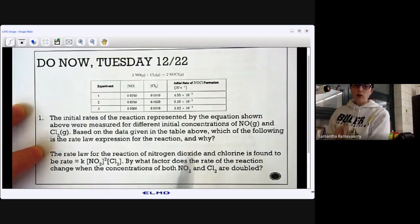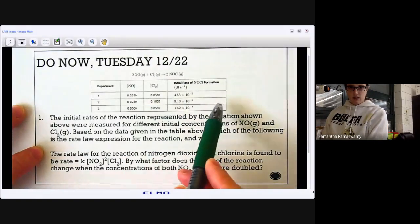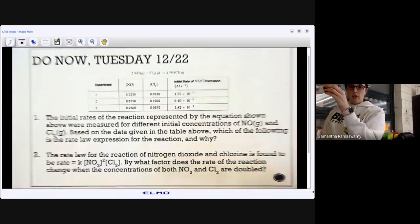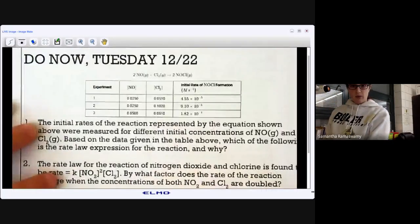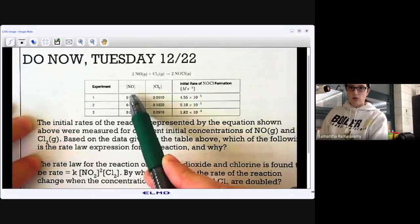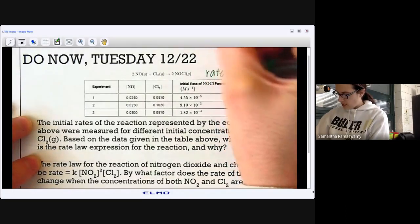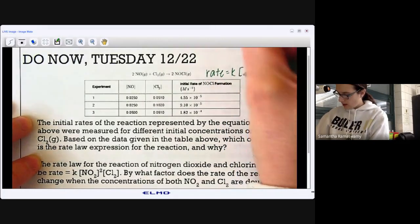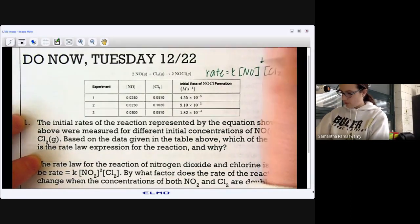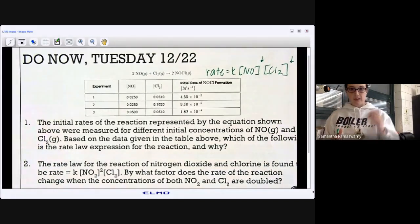So remember, when you want to write a rate law, you have to use the data given. So I'm going to zoom in even more on this table. So if I want to see what the order with respect to NO is, because remember, to write a rate law, it's rate equals k, and we're going to have times the concentration of the reactants, but they're going to be raised to a certain power. And those exponents are the orders of reaction for each reactant.